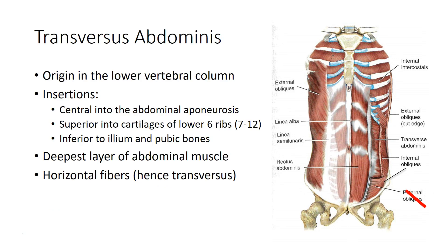The transverse abdominis originates on the lower vertebral column and inserts into the abdominal aponeurosis, superiorly into the cartilages of the lower ribs, and inferiorly to the ilium and the pubic bones. It is called the transverse abdominis because the fibers run along the transverse plane. This is the deepest layer of abdominal muscle, so in the image to the right you see them only as other pieces of muscle in the abdominal aponeurosis are cut away to show them underneath.